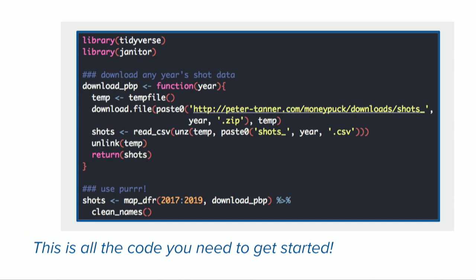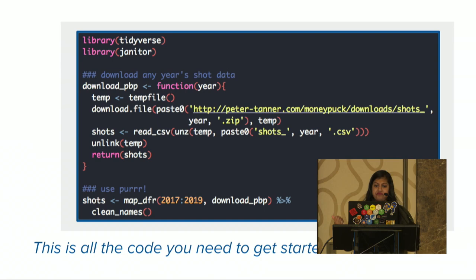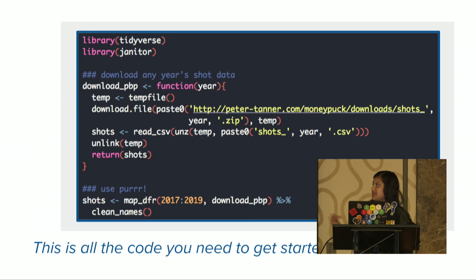This is the big code chunk that I'm sharing. It's not a complicated model or anything, but I really did want to share this to show how easy it is to get NHL shot data in your RStudio instance and start to analyze it. All I did was write a function to download the CSVs from his website and then use a bit of purrr to map that to the three most recent seasons. And I love the janitor package — I love clean_names, I love snake case. I'll be tweeting this out later, so you don't have to write it down right now.